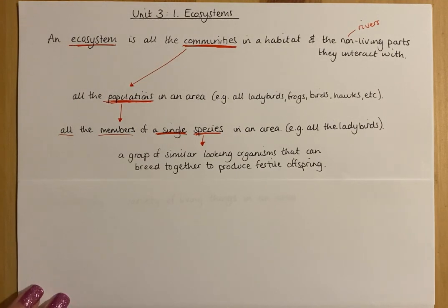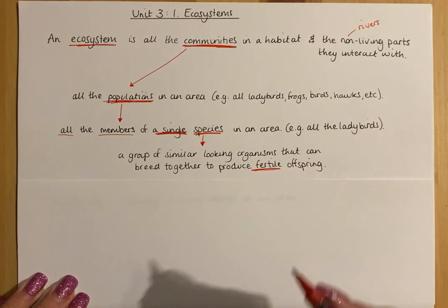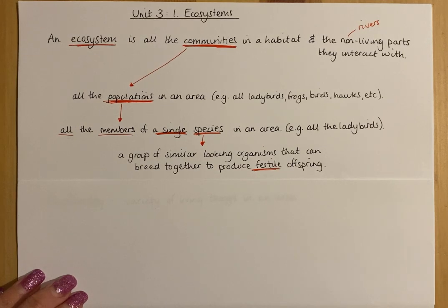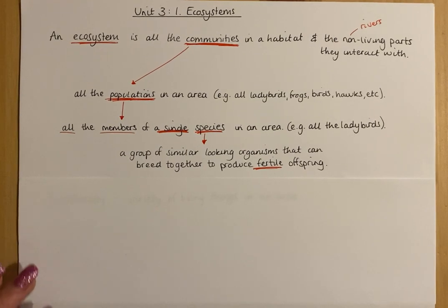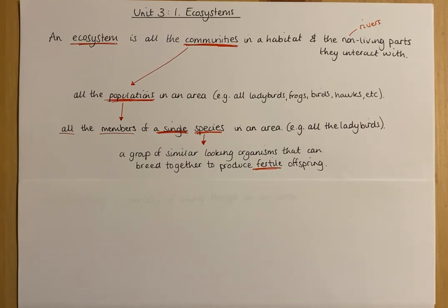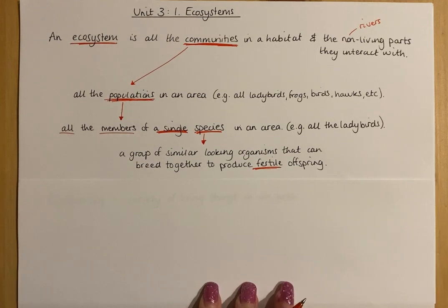You'll also need to know the definition of a species. A species is a group of similar-looking organisms that breed together to produce fertile offspring. Fertile means it can reproduce to make more of themselves. For example, dogs — regardless of breed, a Great Dane and a Chihuahua can produce fertile offspring. But a lion and a tiger produce a liger that is infertile, showing that a lion and a tiger are two separate species.